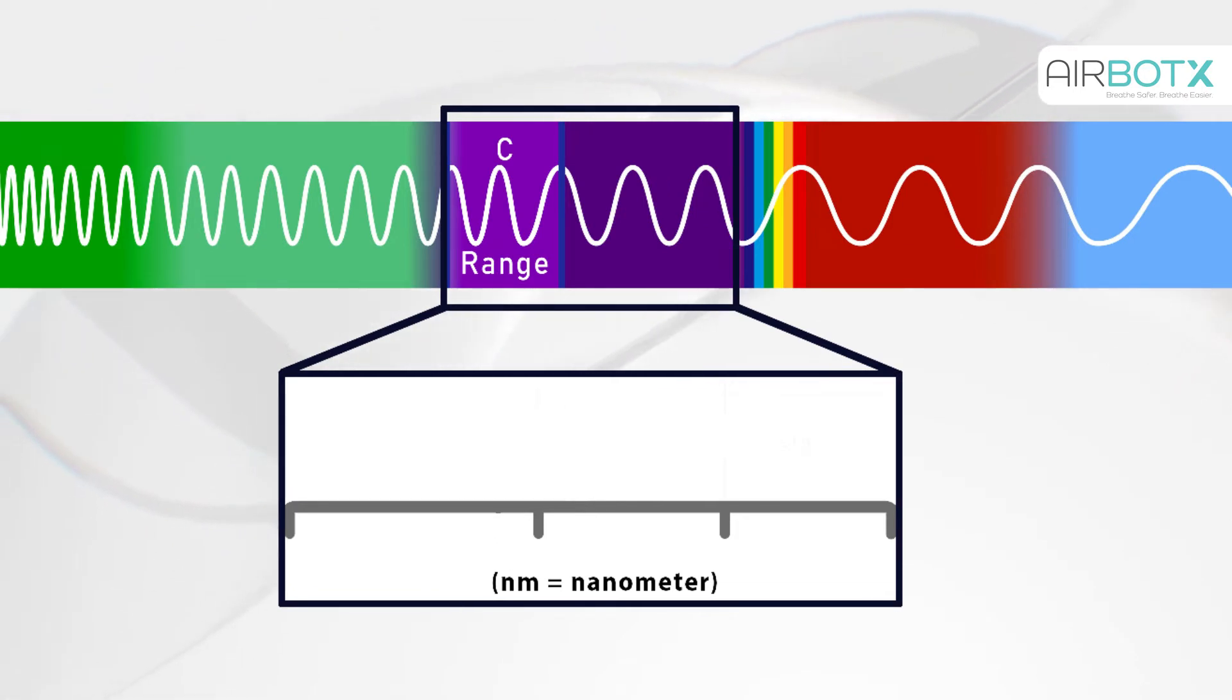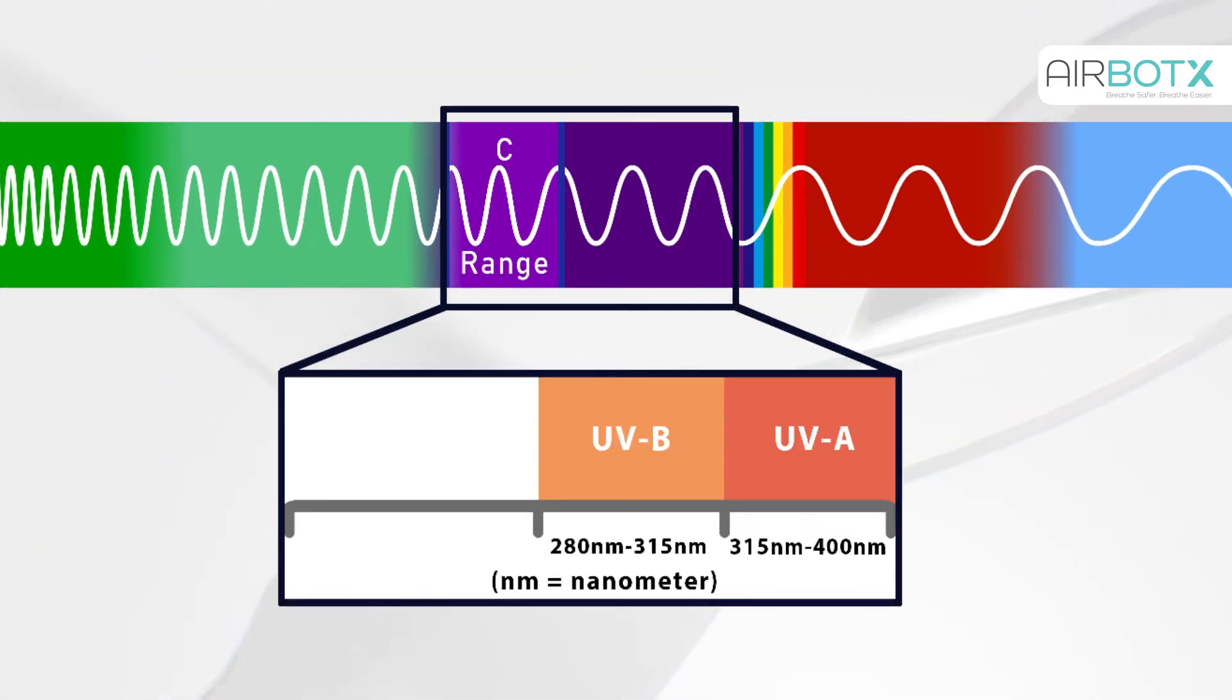The three categories of UV are UV-A, UV-B, and UV-C.